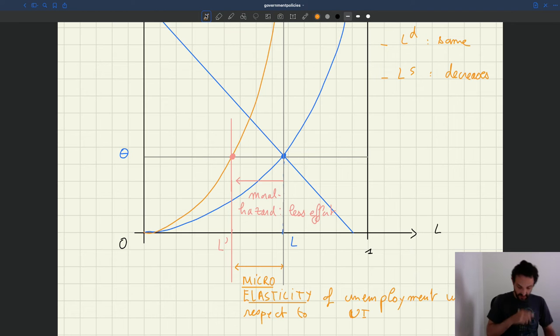The micro-elasticity basically captures how much unemployment is going to change when you change UI. This micro means at the micro level, so if we look only at one individual worker, it means keeping tightness constant. In terms of notation, this is often denoted epsilon with a small l because it's micro. This tells us how much employment is lost when we increase UI but keeping tightness constant.